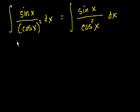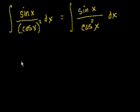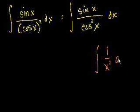In general, you know to do u-substitution, or integration by substitution, when you see something and you see its derivative sitting there. You think: if this cosine of x was just an x or just a u, this would be a really easy integral to do. And we know how to do this integral — let me do it on the side. The integral of 1 over x squared dx.